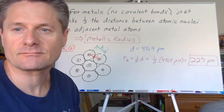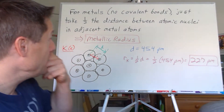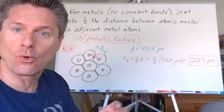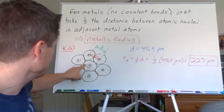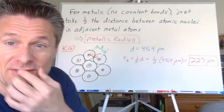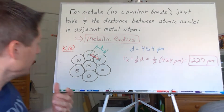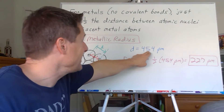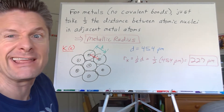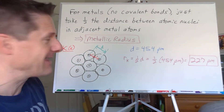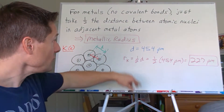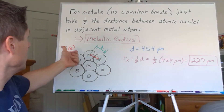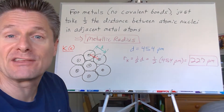For metals, it's pretty much the same idea, but metal atoms don't bond covalently. Instead, imagine stacking marbles or oranges — they form crystalline lattices in three dimensions. We can measure the internuclear distance using X-ray diffraction. For potassium solid, let's say that's 454 picometers. Since they're the same atoms, the metallic radius is just half of that distance: 454 divided by 2 equals 227 picometers for potassium. Pretty much the same approach as covalent radius.